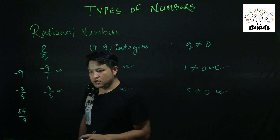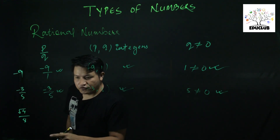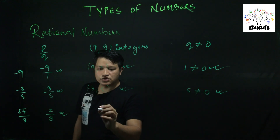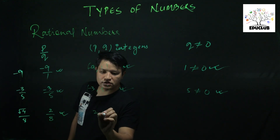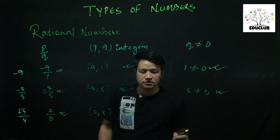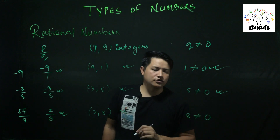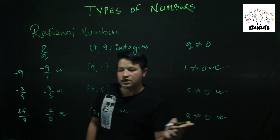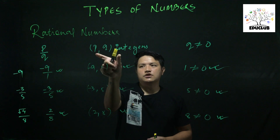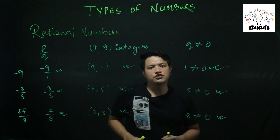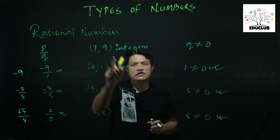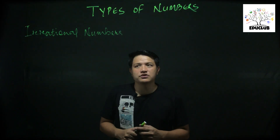For root 4 by 8: root 4 has a value of 2, so it becomes 2 by 8. First condition satisfied — it's in p by q form. Second condition: 2 and 8 are both integers — satisfied. Third condition: denominator 8 is not equal to zero — satisfied. So root 4 by 8 is a rational number. If the three conditions — p by q form, p and q are integers, and q not equal to zero — are all satisfied, the number is rational.